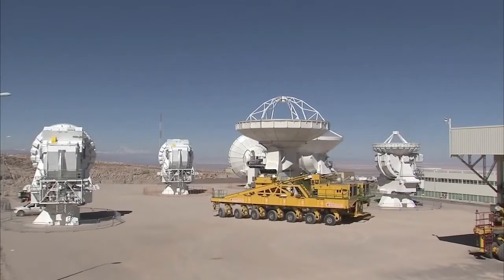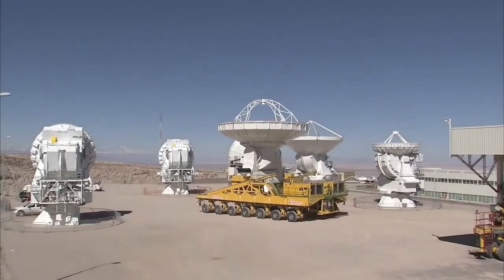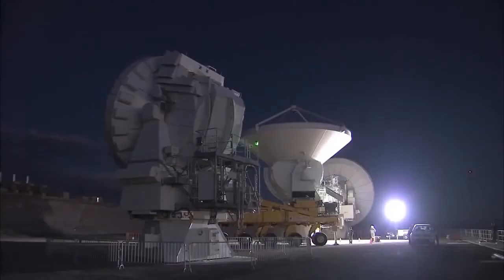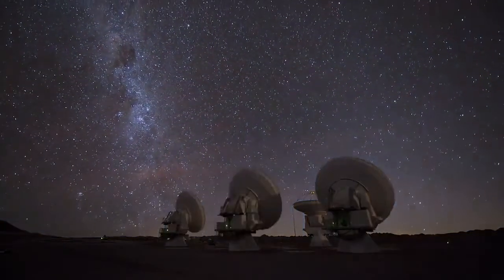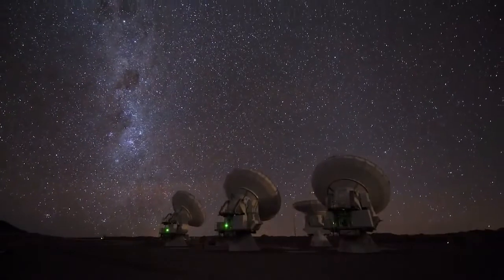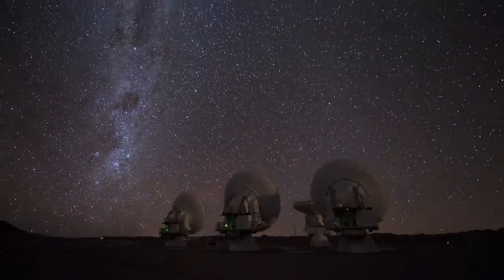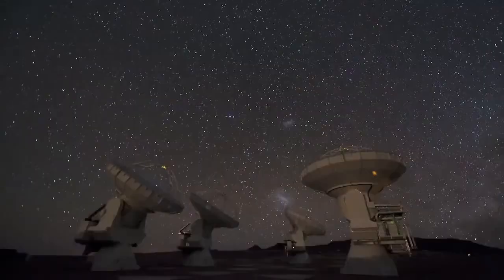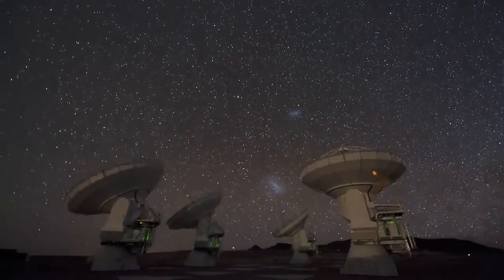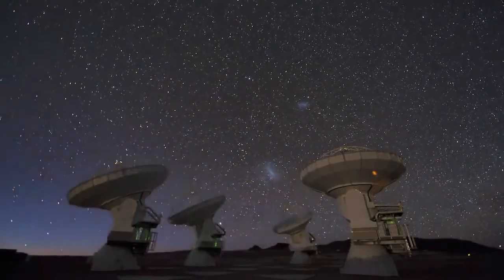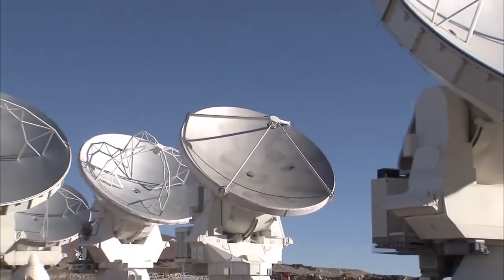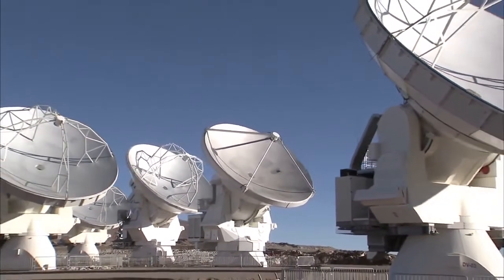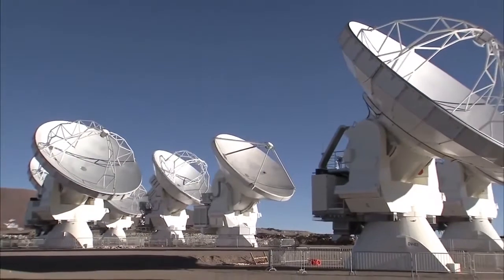The ALMA team has been busy testing the observatory's systems over the past months, in preparation for the first round of scientific observations. One outcome of their tests is the first image published from ALMA. This image was made using only 12 antennas – fewer than will be used for the first science observations, let alone the completed observatory – and spaced much closer together as well. Both of these factors make the new image just a taster of what is to come.